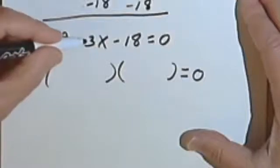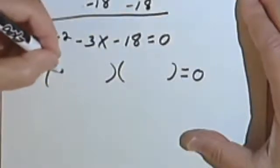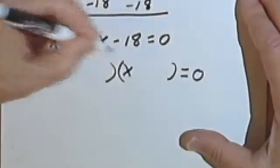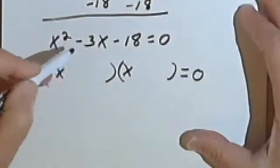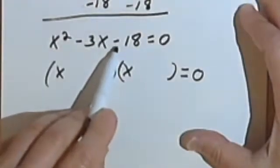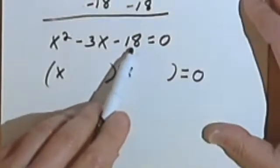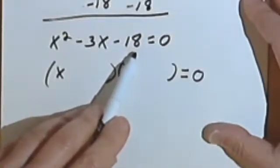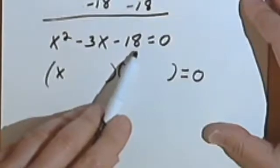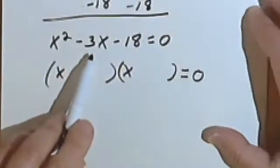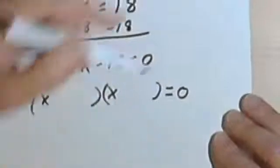So x squared minus 3x minus 18. That tells me I probably want an x here and here. Looking at the signs, I see that the sign for the third term is negative. So I'm looking for two factors of 18, one positive and one negative, that I can add together and get a negative 3.